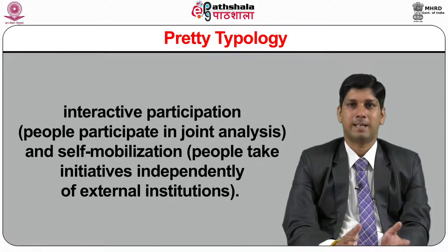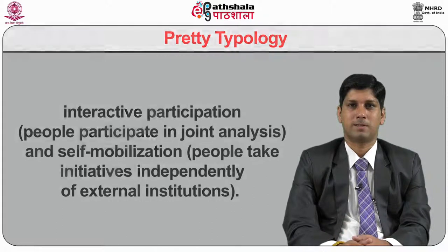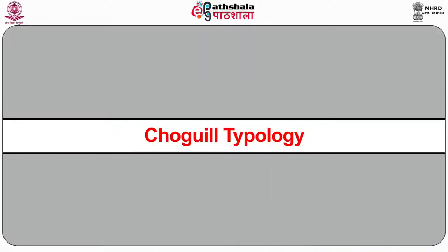Then there is the Chogil typology, which was proposed in the year 1996, especially for underdeveloped countries. According to this typology, there are eight hierarchy levels: self-management, conspiracy, informing, diplomacy, dissimulation, demonstration, partnership and empowerment.